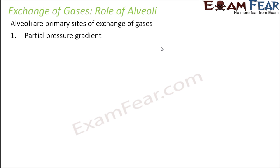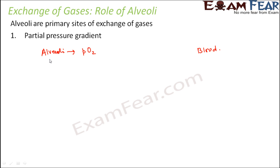To understand this, we need to know that exchange takes place from alveoli to blood. We should know the values of partial pressure of oxygen in the alveoli. The air present in the alveoli is the air we have breathed in. The partial pressure of oxygen in that air is 104 mm of mercury, and the partial pressure of carbon dioxide is 40 mm of mercury.